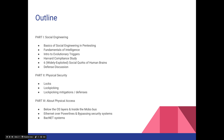The outline of today's talk has three parts. Part one covers social engineering: the basics, fundamentals of intelligence gathering, evolutionary triggers, classic psychology and social manipulation studies, six widely exploited social quirks of the human brain, and defenses for social engineering. Part two covers physical security, going in-depth about how locks work, lockpicking with animations from the tool organization, and lockpicking mitigations and how to pick a good lock.